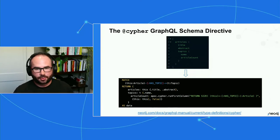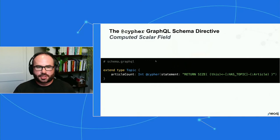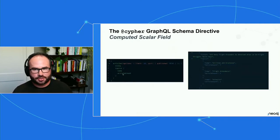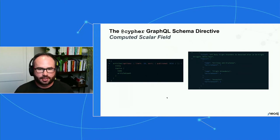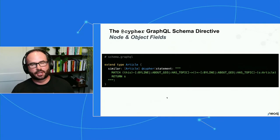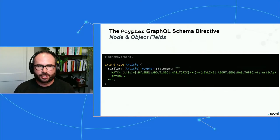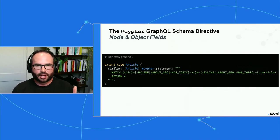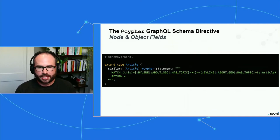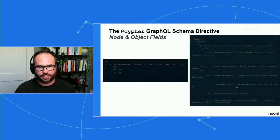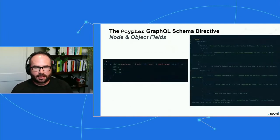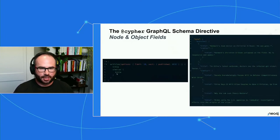Here we're defining a computed field on the Topic type — an article count field whose value is mapped to a Cypher statement that counts the number of articles connected to that topic. When we include article count in our selection set, that Cypher query runs as a sub-query within the single database query that's generated — so we still address the N+1 query problem, but now with custom user-defined logic. We can also use Cypher directives on object or object array fields, such as adding a recommendation query that finds articles with overlapping authors or topics.